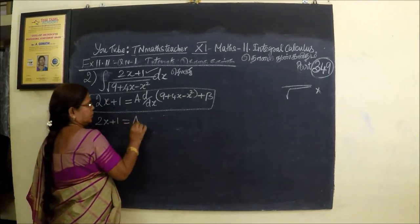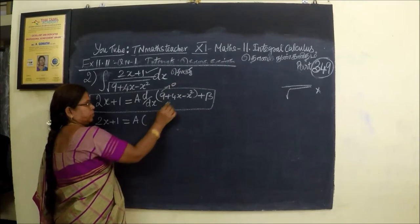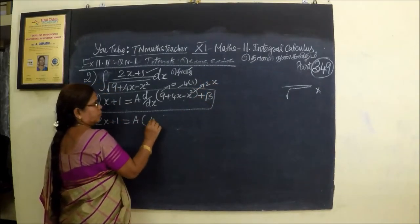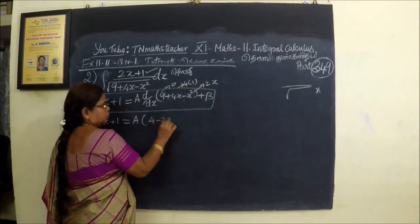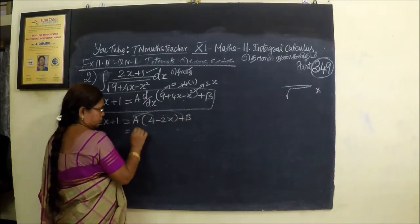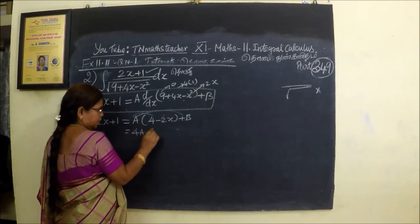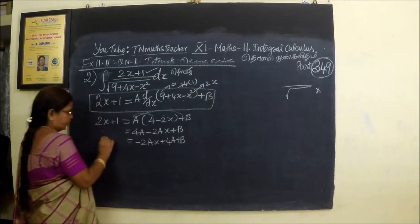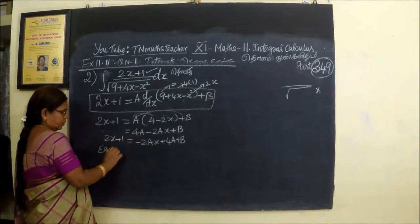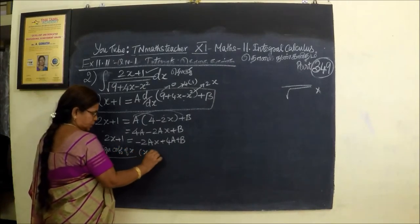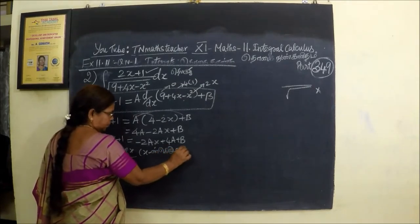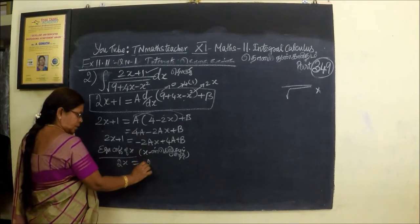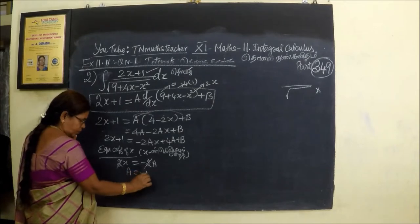2x plus 1 is equal to a bracket. 9 is equal to 0. 4x is equal to 1. xy is equal to 2x. We are considering 4 minus 2x plus b — take 4a inside: 4a minus 2ax plus b. Writing in order: minus 2ax plus 4a plus b equals 2x plus 1. So a equals minus 1.